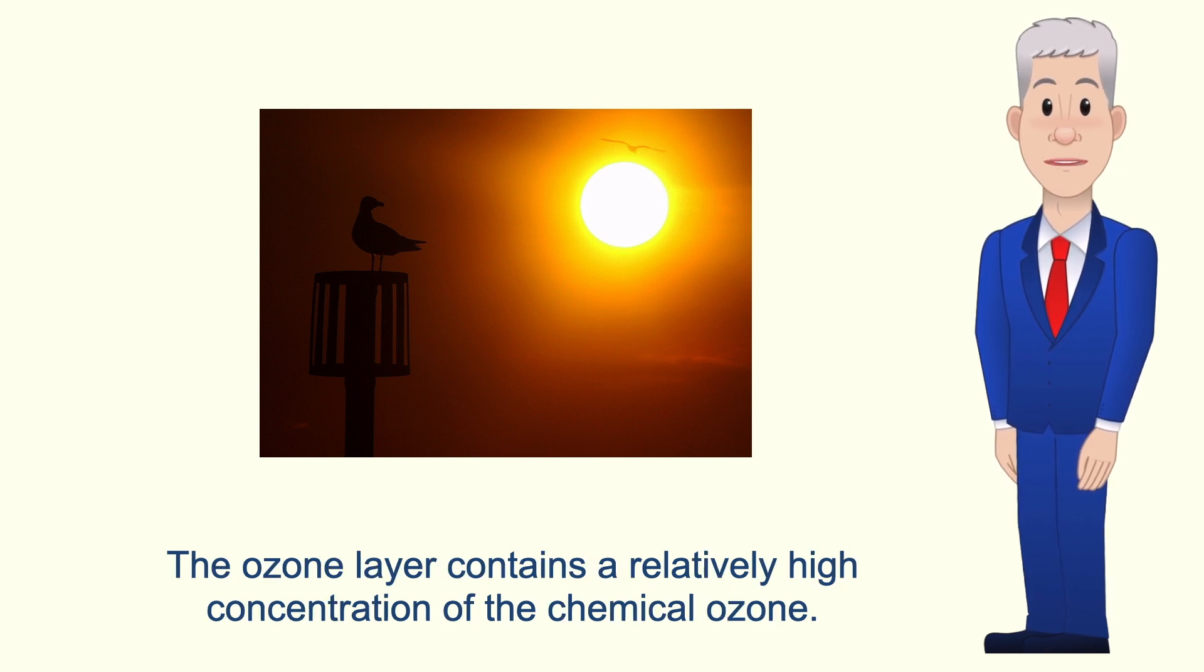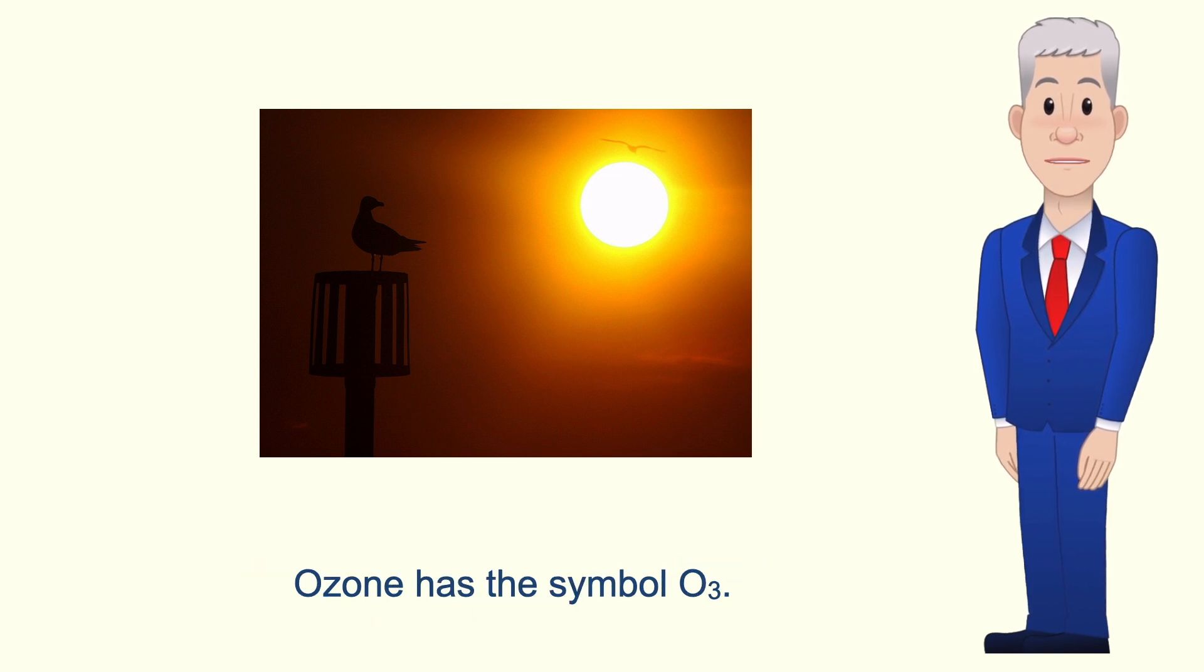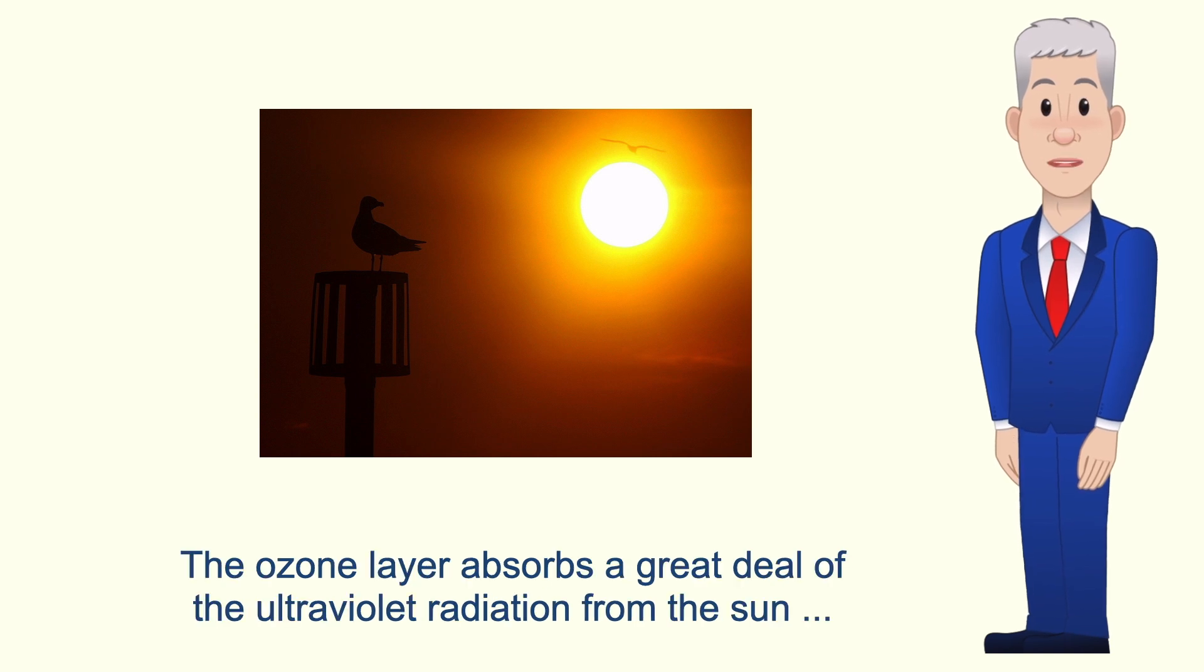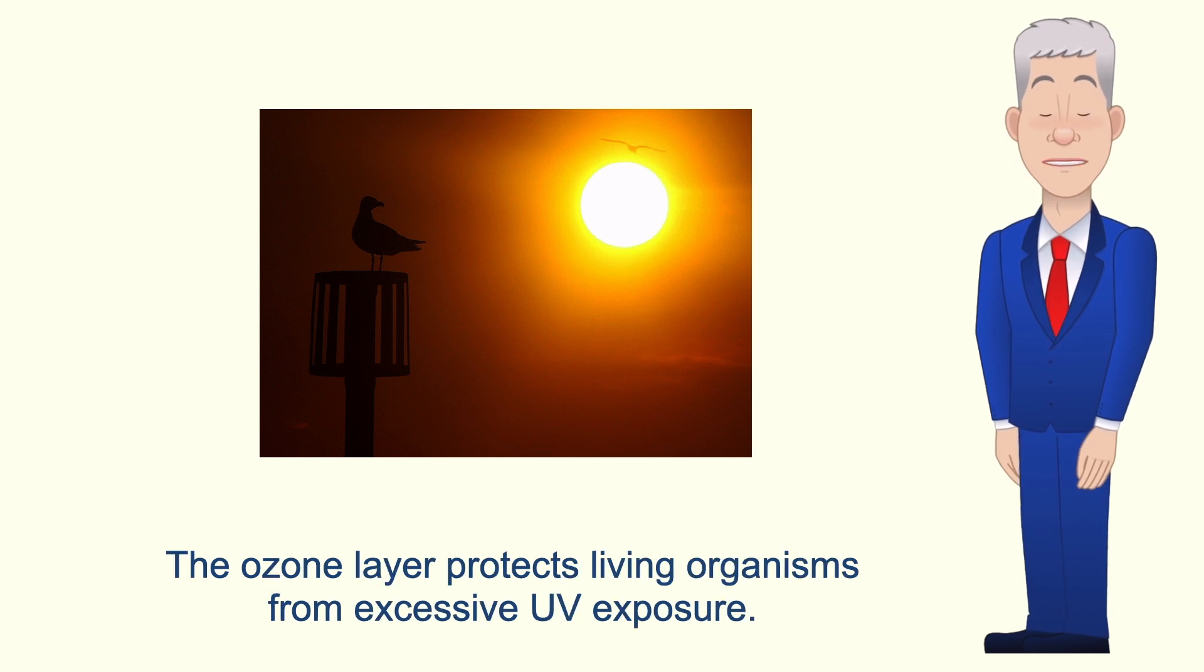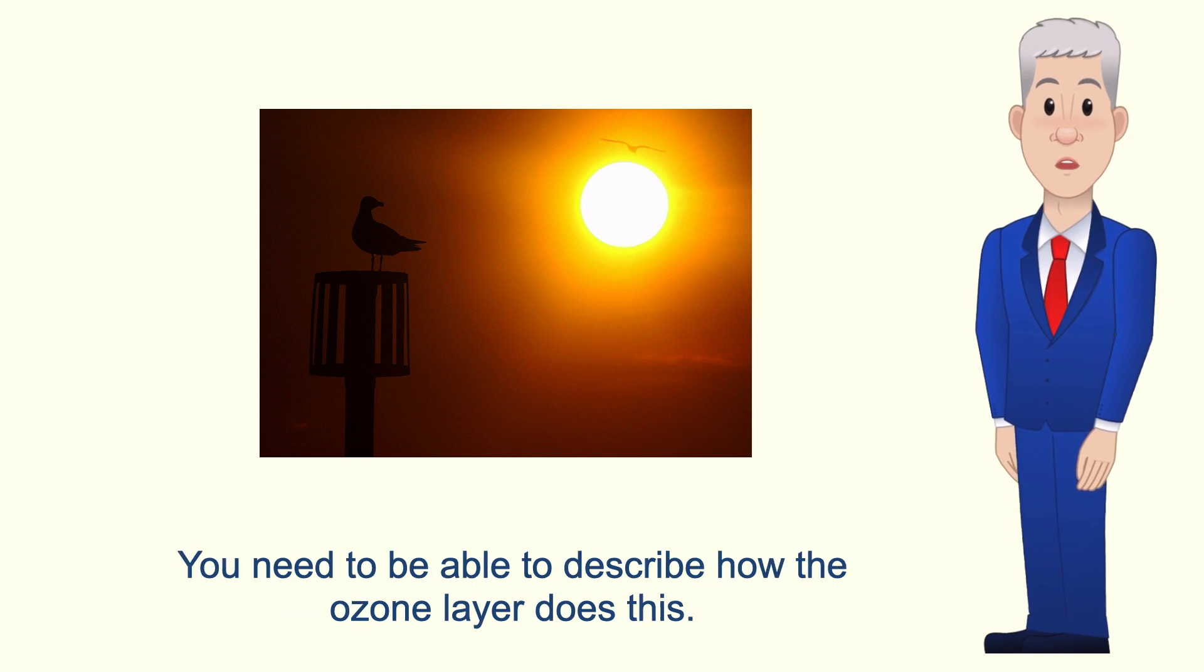The ozone layer contains a relatively high concentration of the chemical ozone. Ozone has the symbol O3. The ozone layer absorbs a great deal of the ultraviolet radiation from the Sun before it can reach the earth's surface. So the ozone layer protects living organisms from excessive UV exposure. You need to be able to describe how the ozone layer does this.